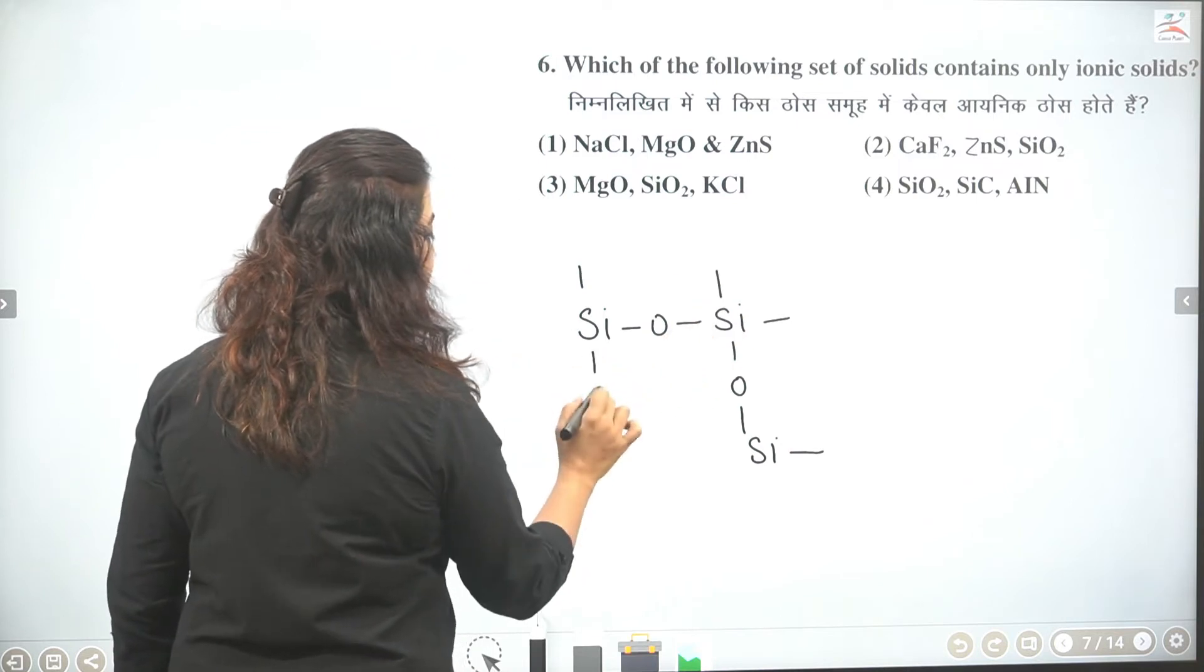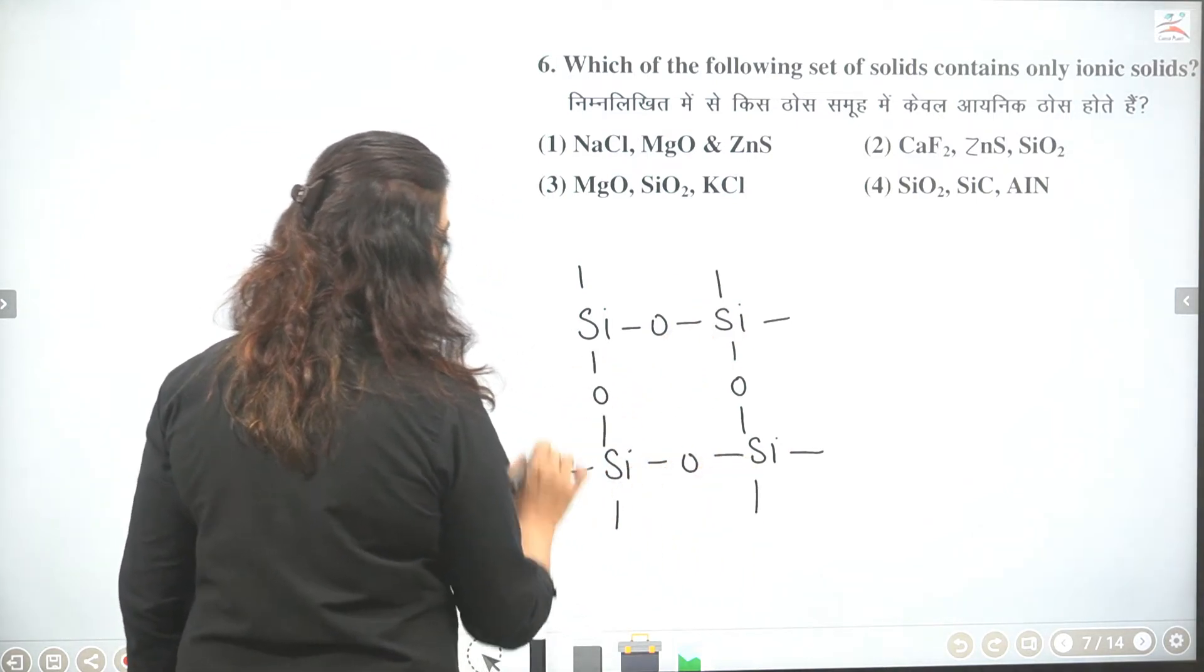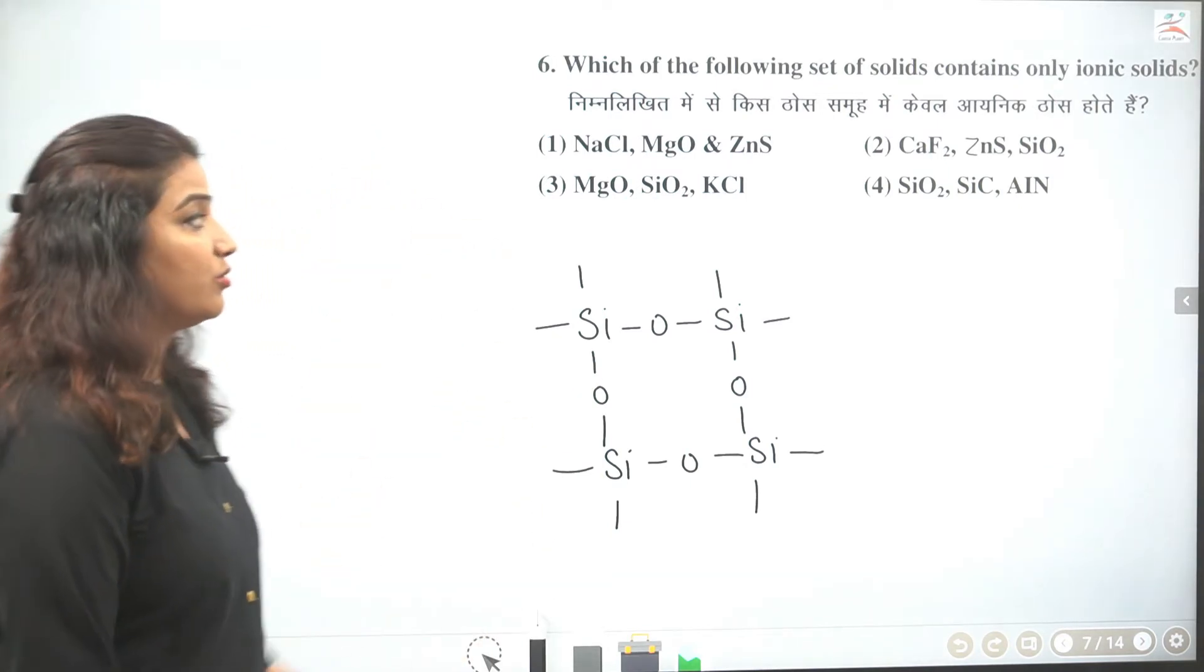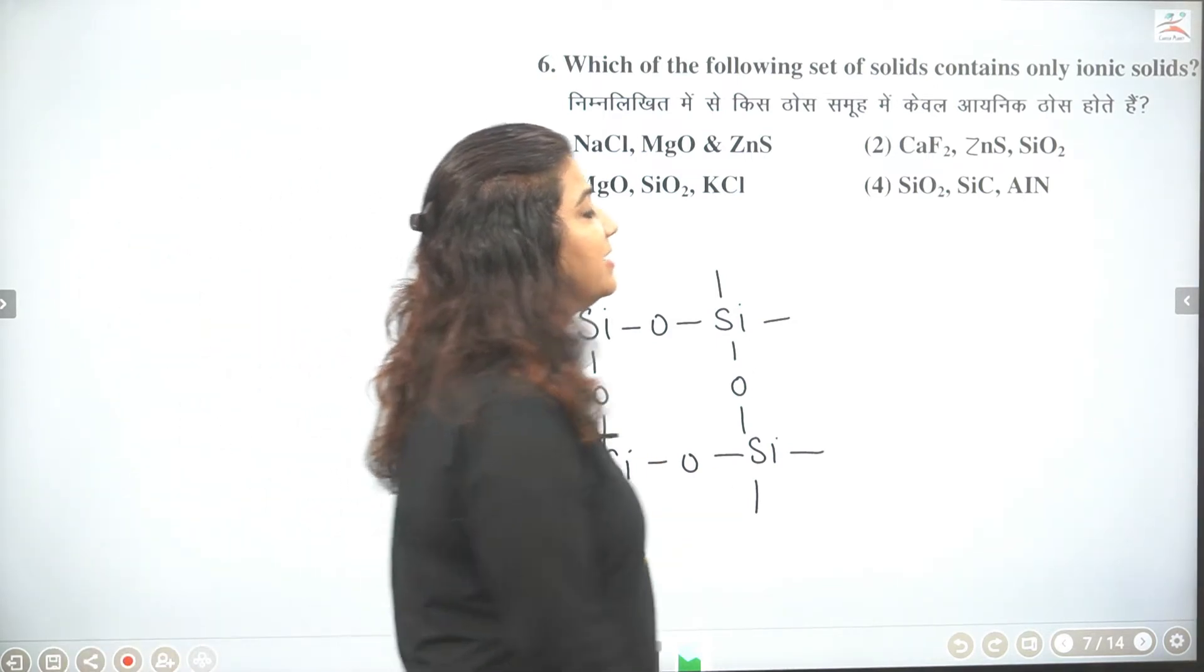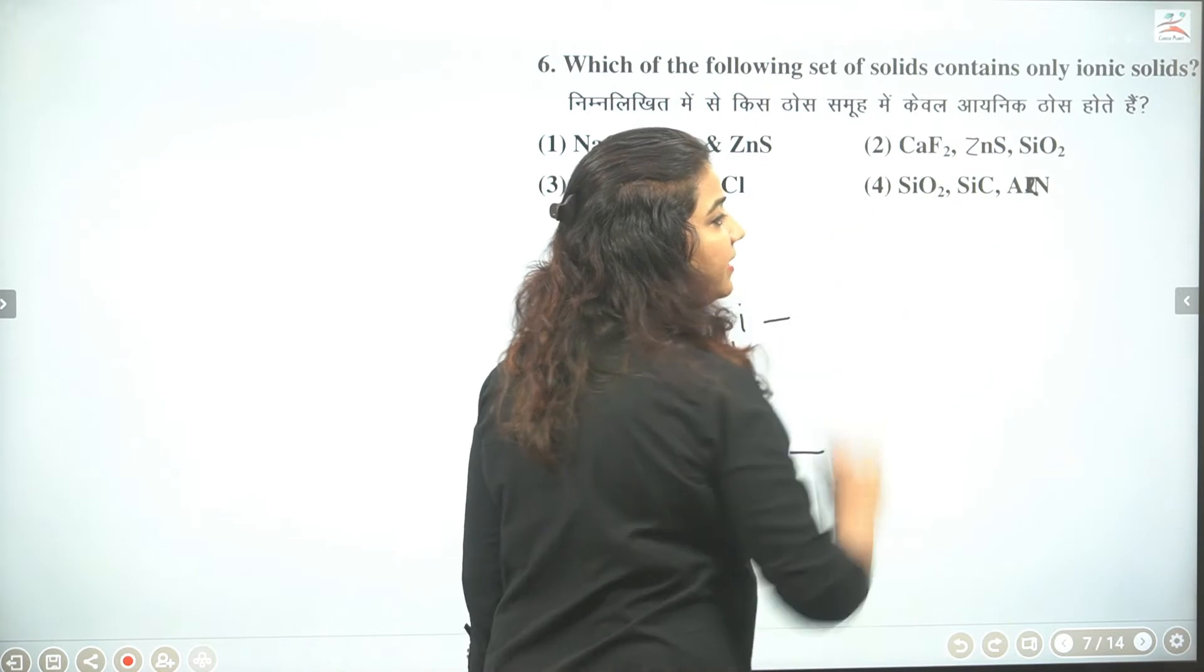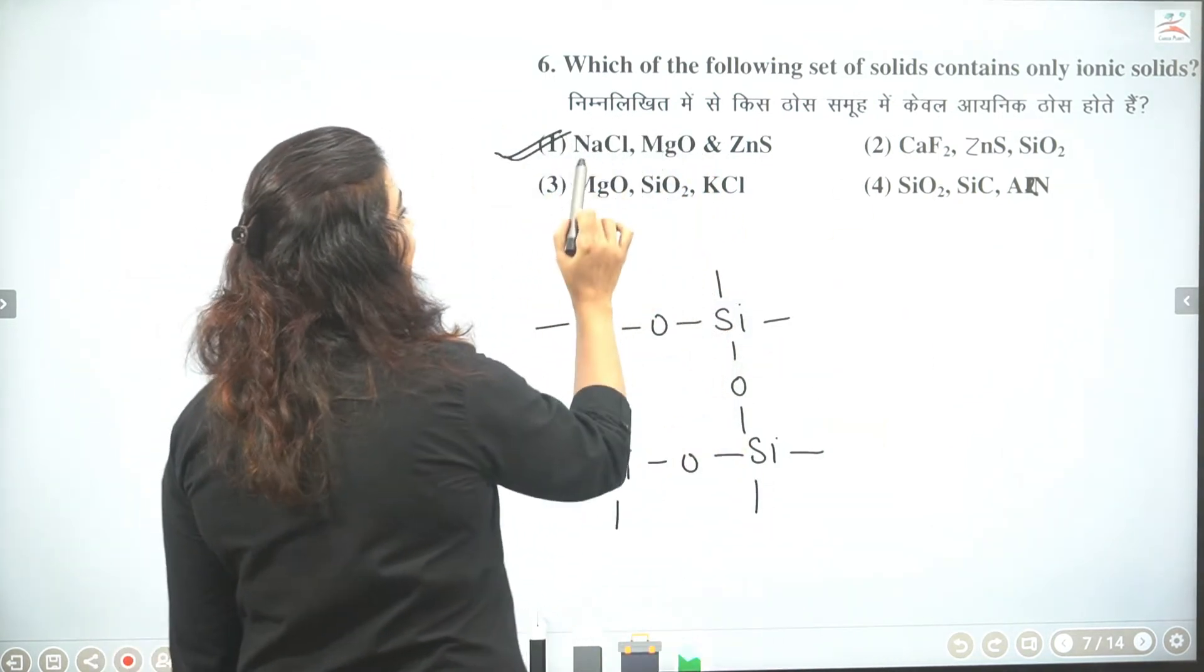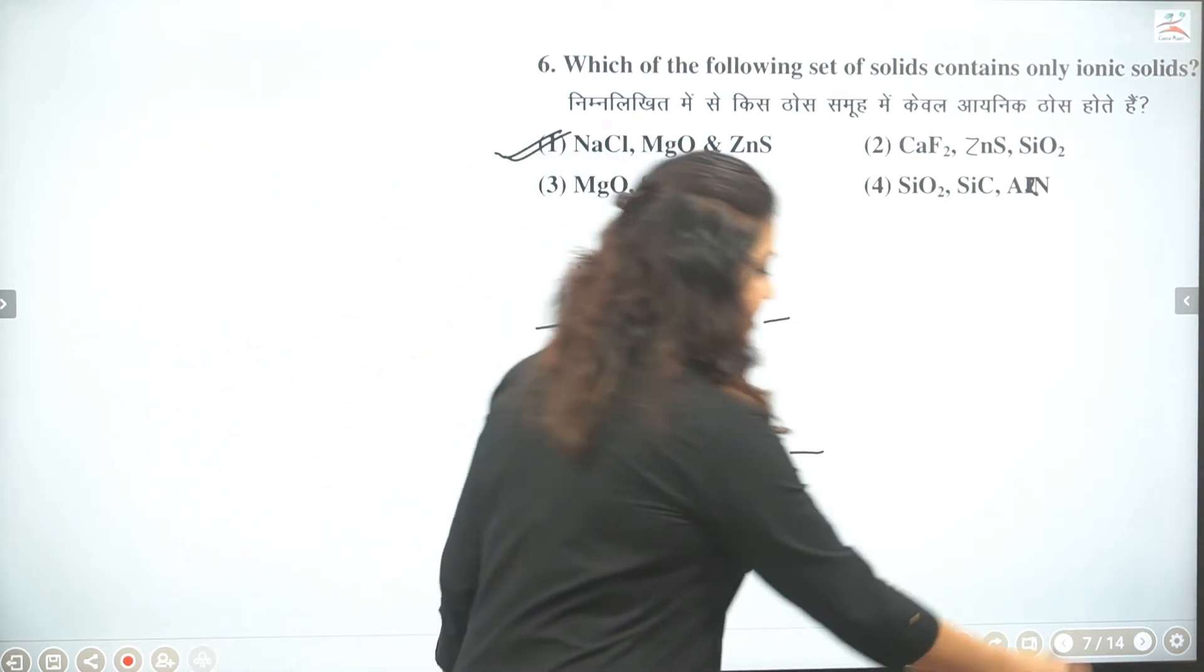Toh hum kehenge isme yeh toh covalent 3D network solid ka example hai. Toh yeh toh galat hoga. Third mein phir SiO2 hai. Mein nahi le sakti usko. Toh phir SiO2 hai aur SiC bhi hai silicon carbide. Toh yeh yeh bhi nahi bachega, thik hai. So sirf ionic compound chahiye. Toh aapka answer ho jayega NaCl, MgO and ZnS. Correct answer is one.